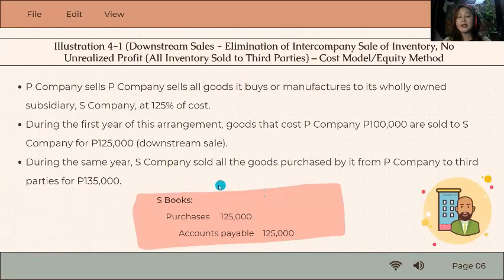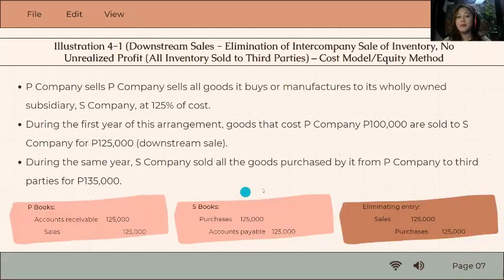Next, S, the subsidiary, will make an entry debiting purchases for 125,000 and crediting accounts payable. They record in their individual books because that's their actual transaction.